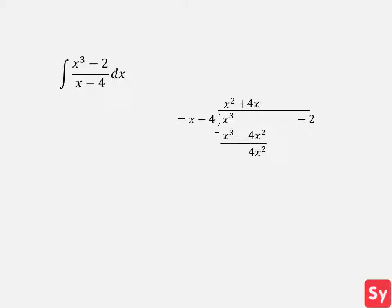We next put down 4x and multiply the denominator by 4x to get x equal to 4x squared. We subtract and get 16x, but don't forget to bring down the negative 2, so we get 16x minus 2. Next we put down a 16 and multiply the denominator by 16. We subtract and get 62 as our remainder. We put it over the denominator and now we have our simplified integrand.